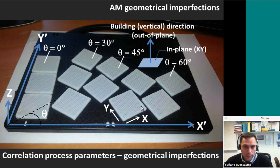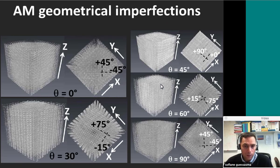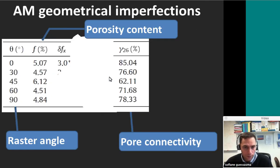FDM, or fused deposition modeling, is really sensitive to orientation. If you manufacture a part in the orientation indicated by theta equals zero, you are not going to have the same performance as parts printed with theta equals 30, 45, or 60 degrees. This is because, if you look at the porosity inside the structure, there is a correlation between the filament crossing and the porosity generated within the part. If you look at the data, the amount of porosity changes only slightly with orientation from zero to 90 degrees, but the connectivity between the porosities changes a lot between orientations.